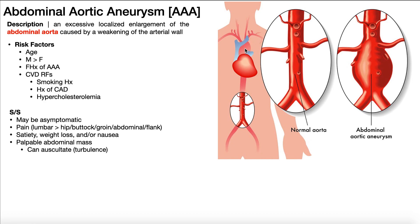A little bit of anatomy here. We have our heart and the arch of the aorta, which loops down. As it descends above the diaphragm, it's referred to as the thoracic descending aorta. But then it crosses through the diaphragm, and once it's into the abdominal cavity, it's termed the descending abdominal aorta, or just the abdominal aorta. There are a bunch of branches coming off of it, and it bifurcates into the two common iliac arteries.